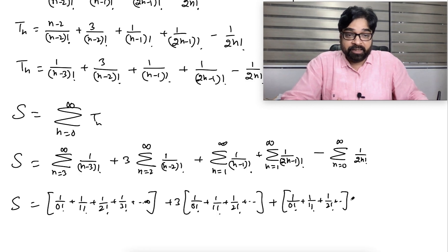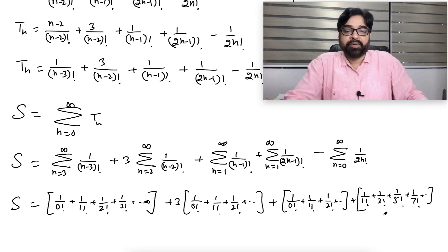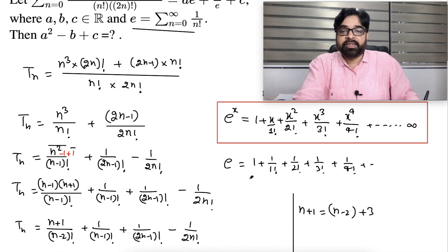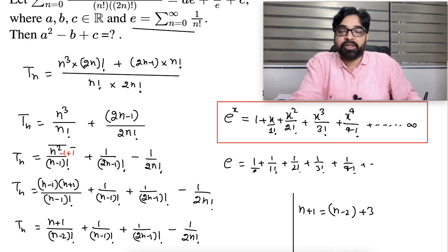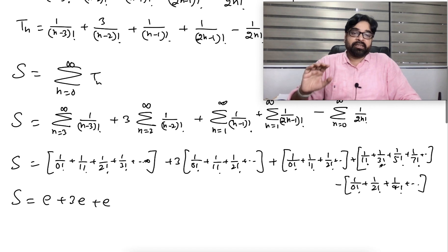This is the tricky point. The first three sums — 1/0! + 1/1! + 1/2! + ... — are each equal to e. So that gives e + 3e + e = 5e. The last two sums together give: 1/1! + 1/3! + 1/5! + ... minus (1/0! + 1/2! + 1/4! + ...), which is not immediately e.